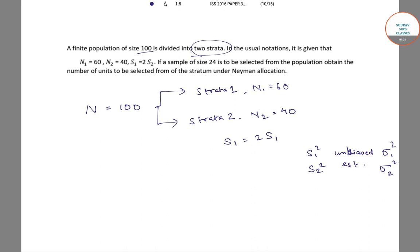We have a sample of size 24, so our small n equals 24. We have to select a sample of size 24 from this population and obtain the number of units to be selected from each stratum — that is, small n1 and n2 — under Neyman's allocation.